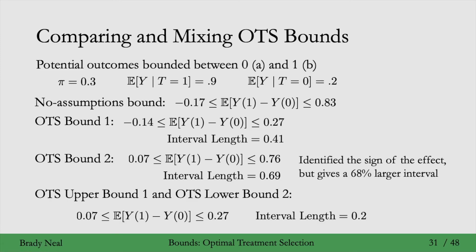Combining the best bounds gives an interval length of only 0.2. By making the OTS assumption, we've identified the sign as positive and achieved a small interval. We could also combine OTS upper bound 2 with OTS lower bound 1, but that gives a poor interval of minus 0.14 to 0.76 for this specific example. Different combinations of bounds will perform better in different scenarios.